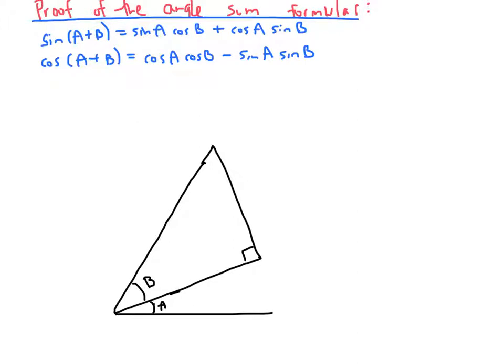Finally, I'll draw a rectangle around that right triangle that just touches its vertices. My rectangle is now divided up into four right triangles. And I'm going to choose units of measurement so the hypotenuse of my middle triangle has length one.